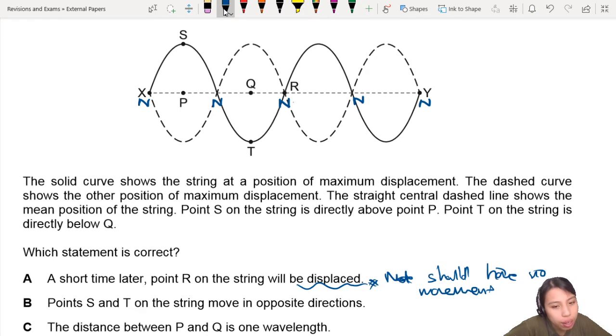B: Points S and T on the string move in opposite directions. Where is S and T? S is up there, so it's going to start moving down because it's kind of oscillating like this, just up and down. T is down there, so it's going to start moving up. Opposite direction? Sounds good. I'm pretty convinced this might be the answer. Nothing wrong with this at all.